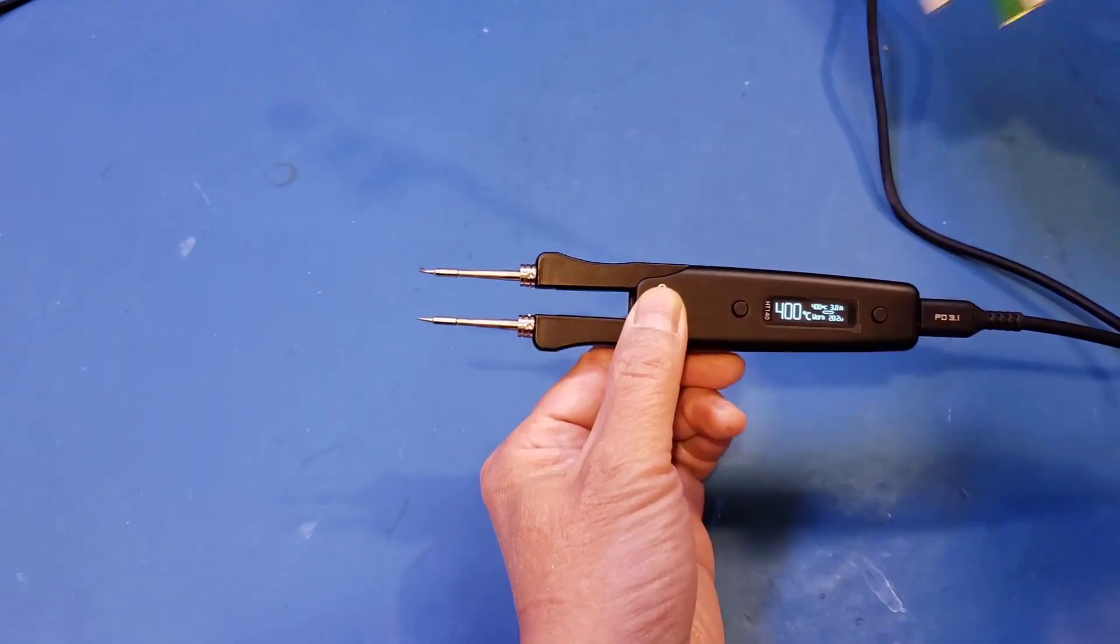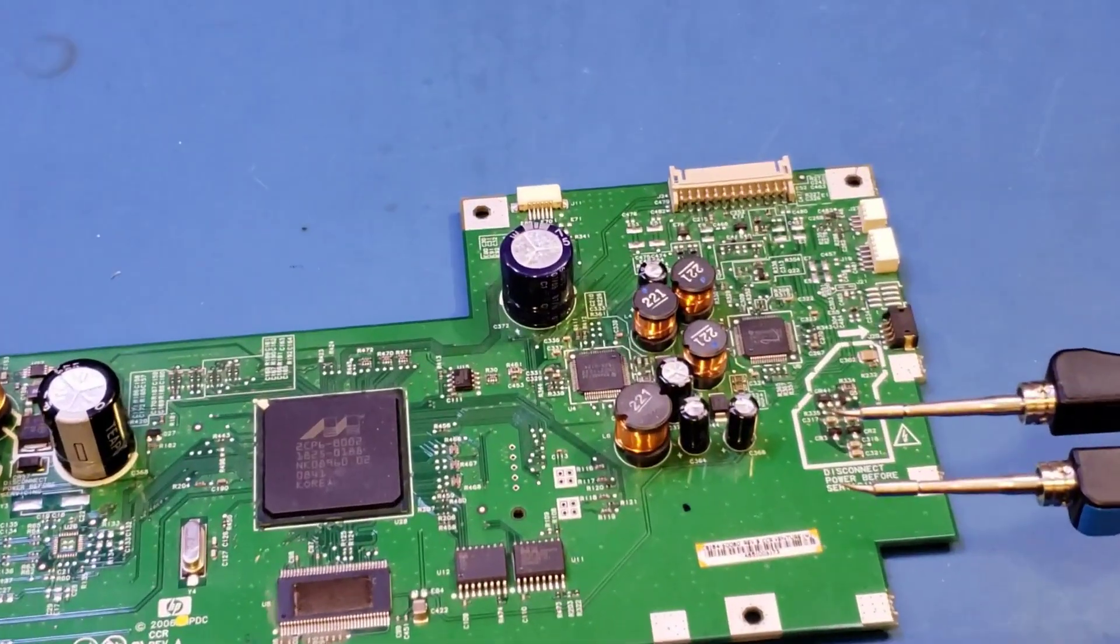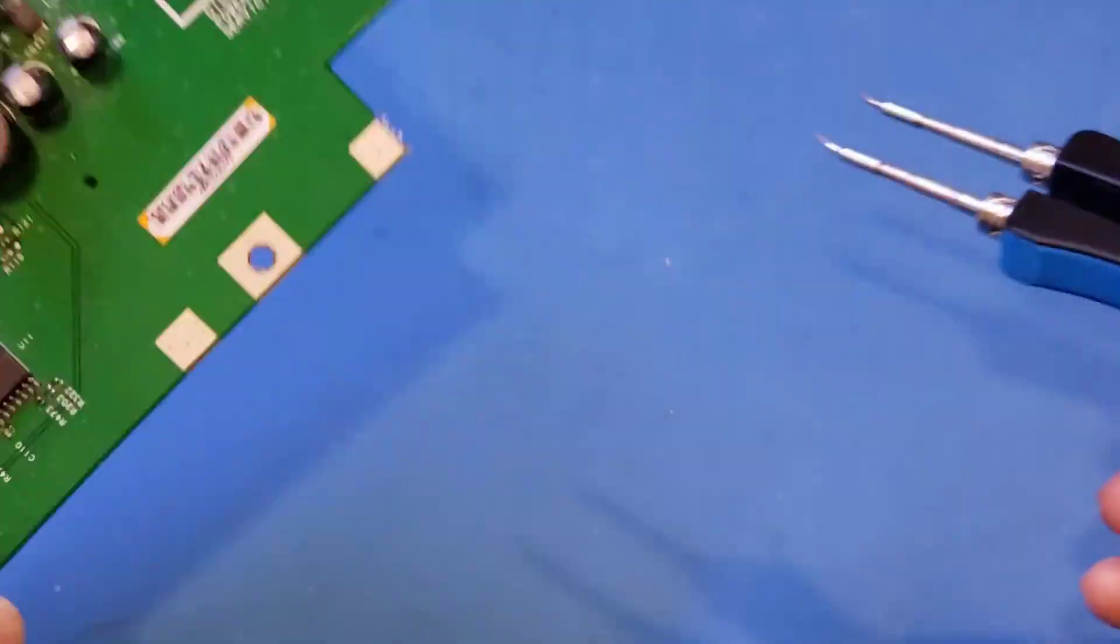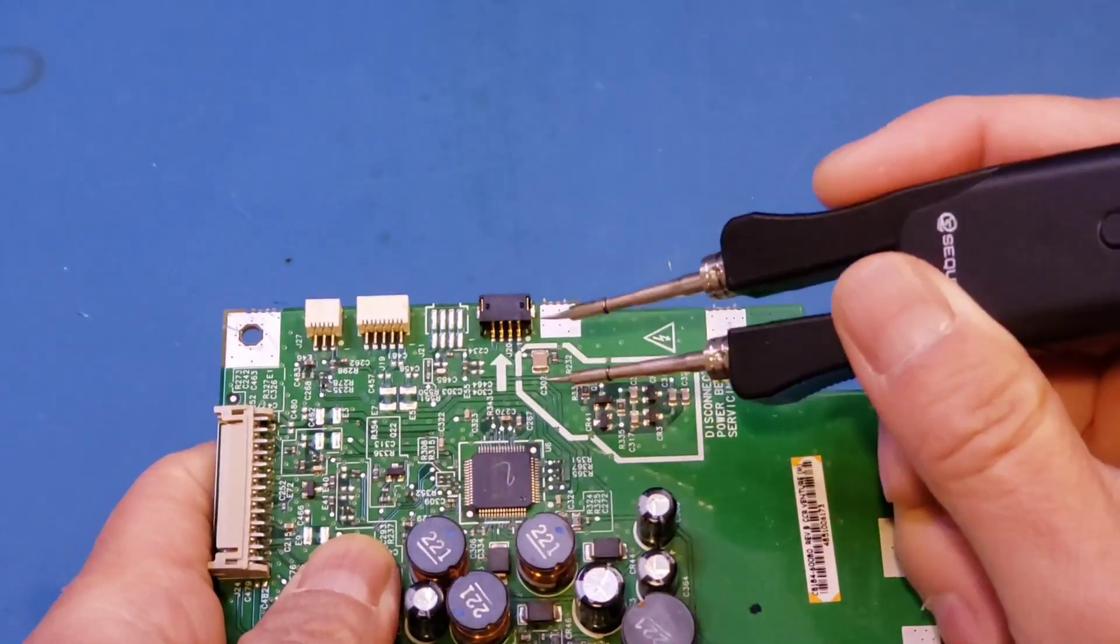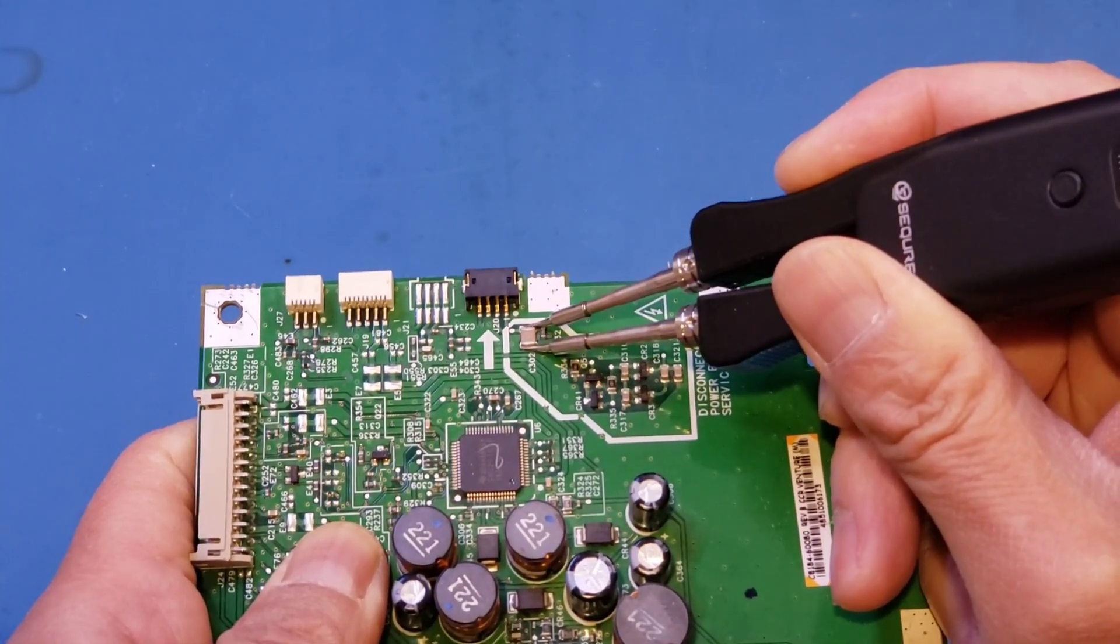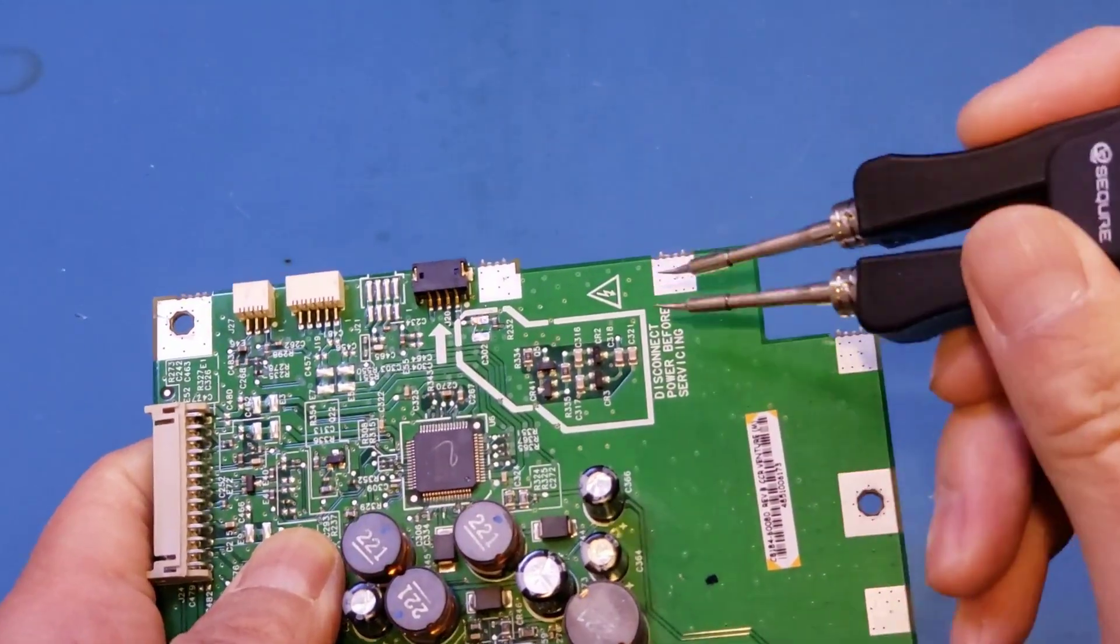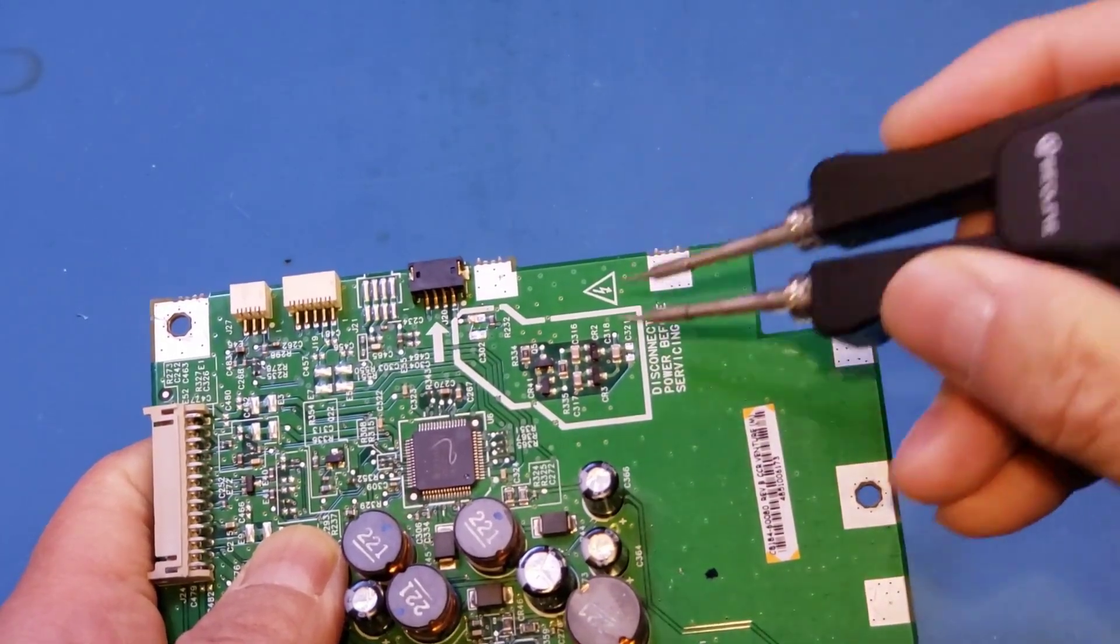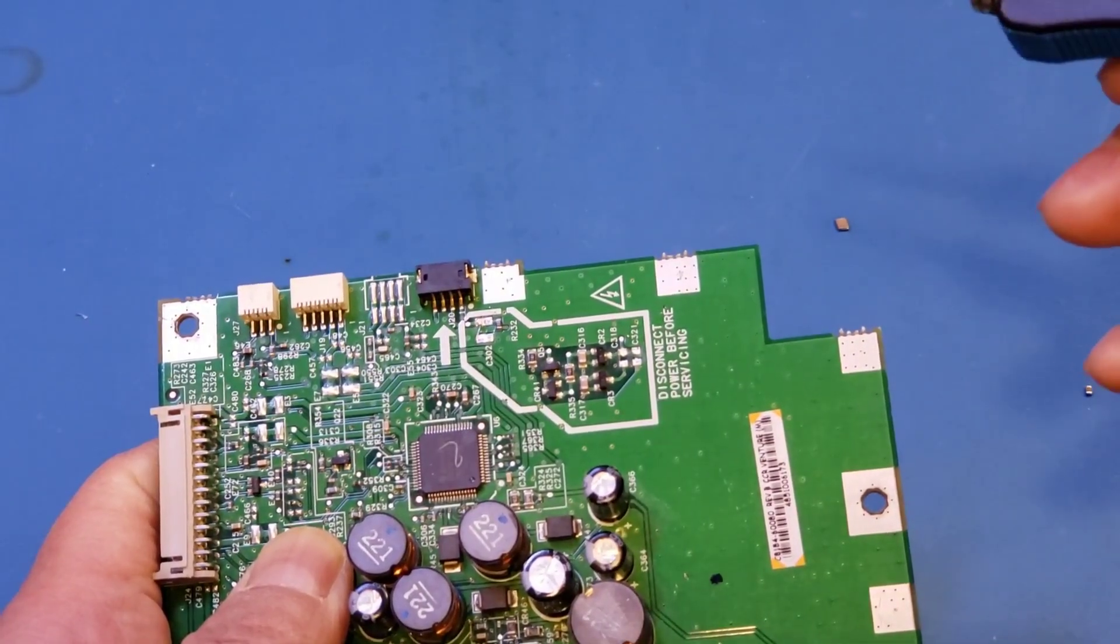So here I have a circuit board. Let's see what we can do here. Let me zoom in a little bit. Let's start with this capacitor here. Let's see if we can get it in view. Yeah, you can see that, no problem. And we'll remove a few more. Yep. Another one. And you can see that it actually works pretty well.